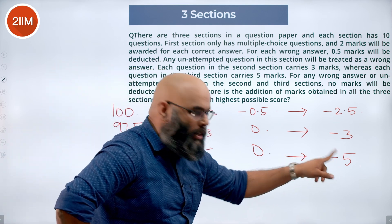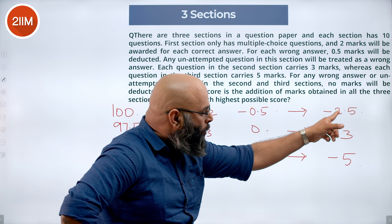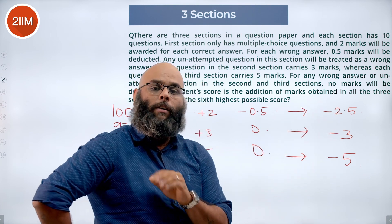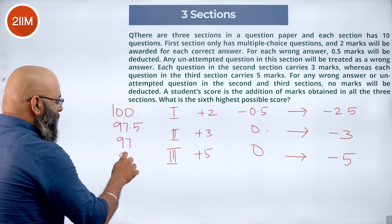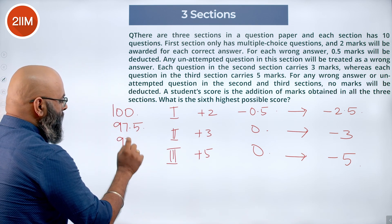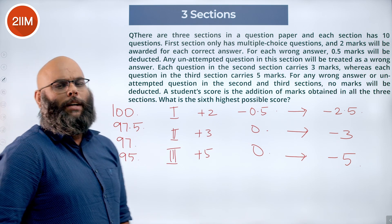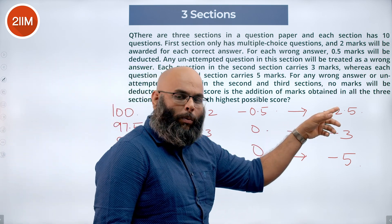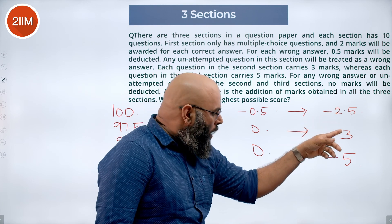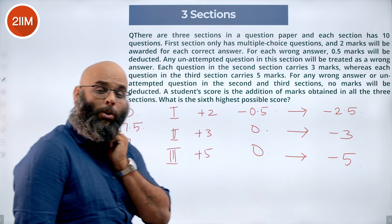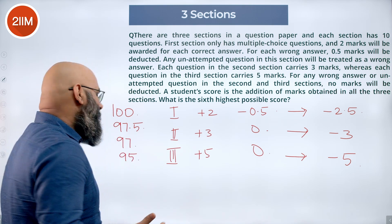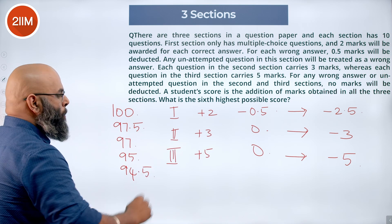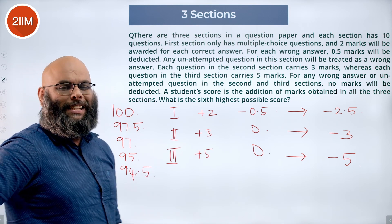Now look at what is the next least mark that I can do. He misses one question over here or he misses two questions over here. Both cases, this person can lose out on 5 marks. So that means the fourth highest mark is going to be 95. What is going to be the fifth highest mark? Now here, a student can miss out on one question from section 1, one question from section 2, that student will lose out on 5.5 marks or the student gets 94.5.